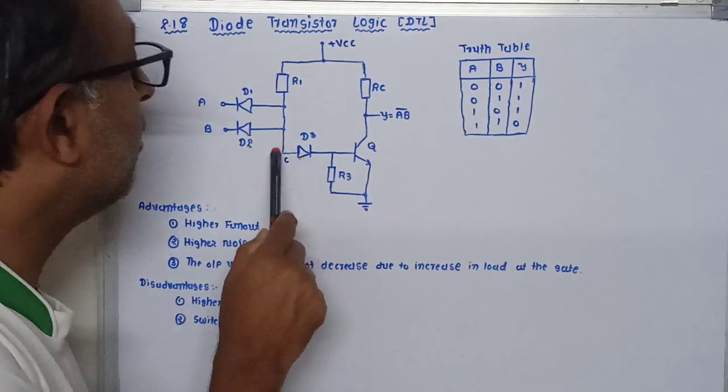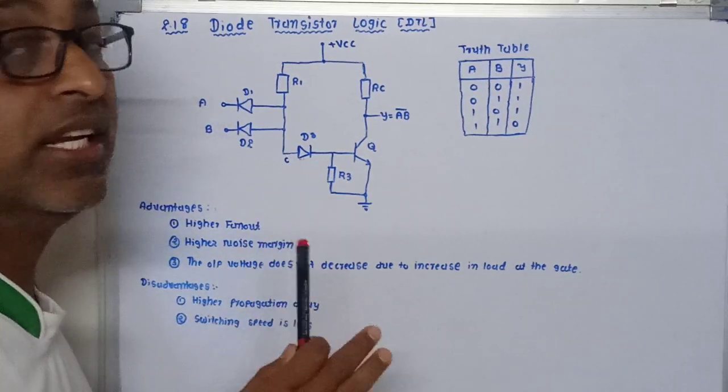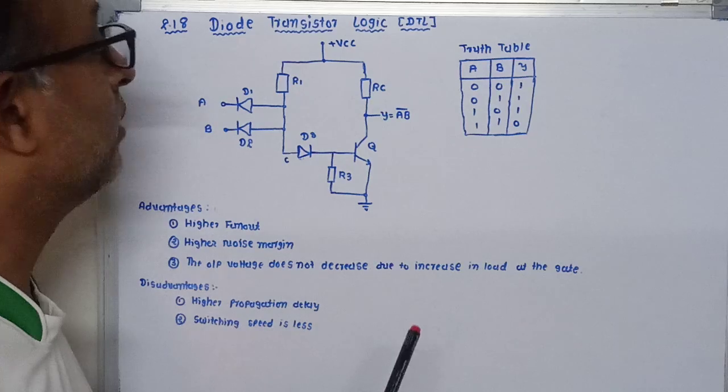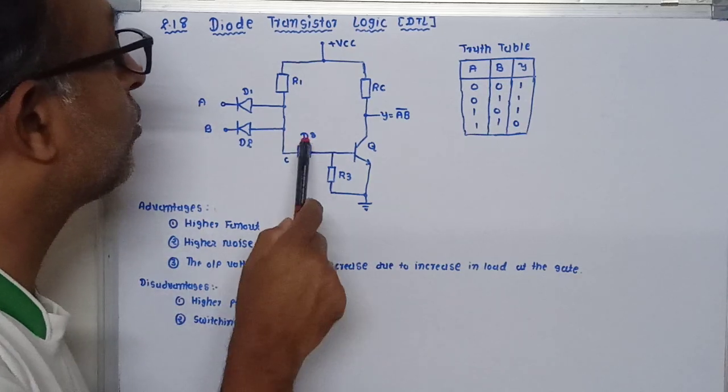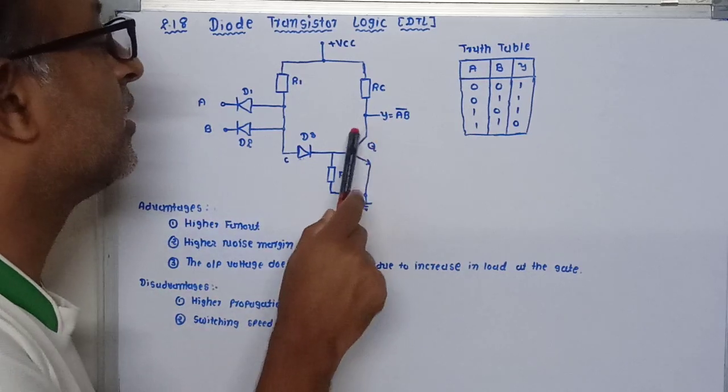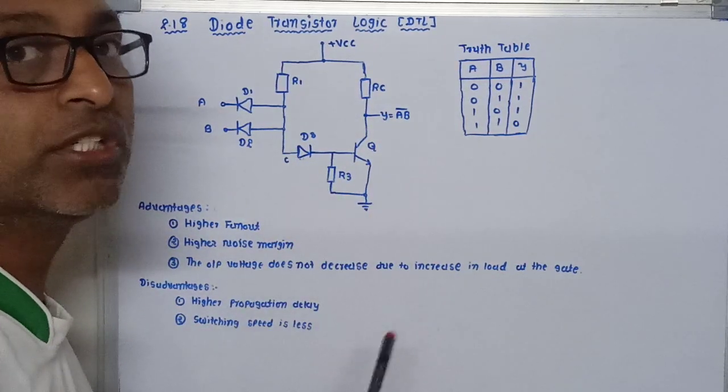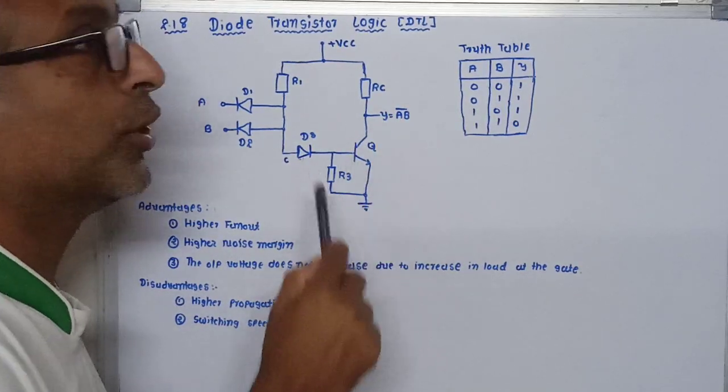The potential available at this point C is sufficient to flow sufficient current through this diode and the transistor, which makes the transistor turn on. This current is sufficient to turn on transistor Q.